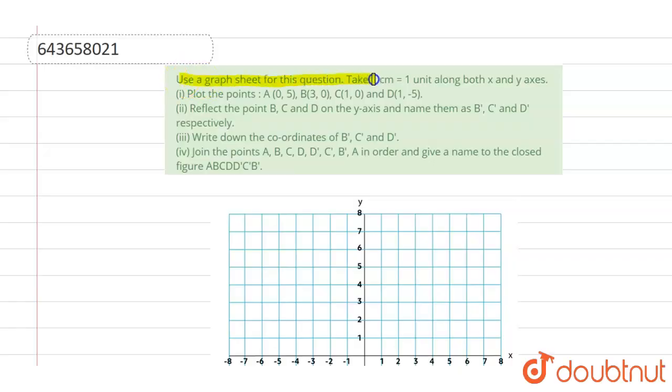Use a graph sheet for this question. Take 1 cm equals to 1 unit in both x and y axis. Plot the points A, B, C and D.